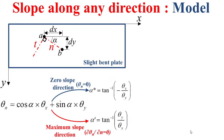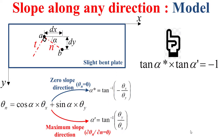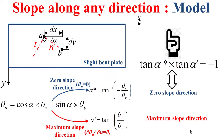We can also determine the maximum slope direction, along which the derivative of theta n with regard to the n direction is equal to zero. This direction is given by the angle alpha prime, equal to arctan of theta y divided by theta x. It is notable that tangent of alpha asterisk multiplied by tangent of alpha prime equals minus 1, meaning the zero slope direction and the maximum slope direction are orthogonal.